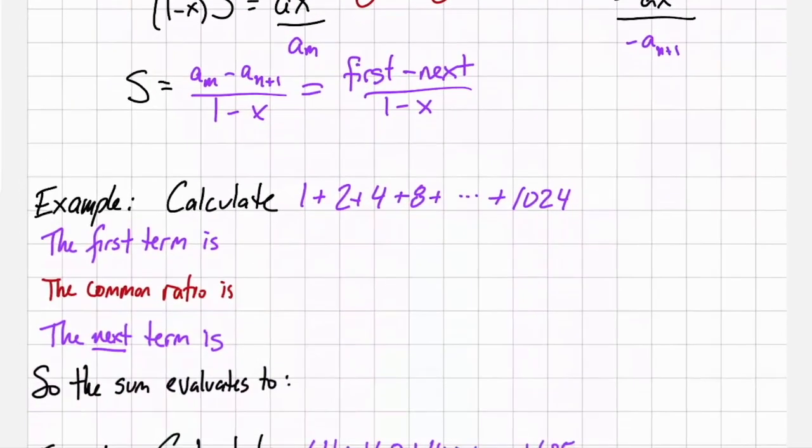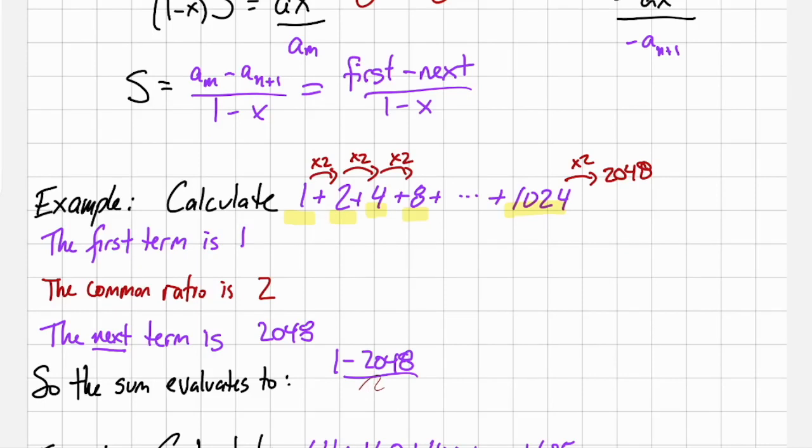If we have the sum 1 + 2 + 4 + 8 + dot dot dot up to 1024. The first term is 1, the common ratio is 2, we multiply by 2 each time, the next term, if we multiplied by 2 again, would give us 2048. So if we apply our formula, we get 1 minus 2048, divided by 1 minus 2, which is equal to negative 2047 over negative 1, which is 2047.